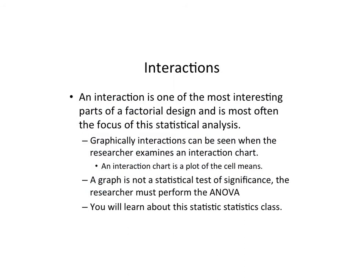The interaction is probably the most interesting part of a factorial design and is most often the focus of statistical analysis. While the main effect hypotheses give us some information, testing the interaction hypothesis is usually the most important thing. Graphically, interactions can be seen on an interaction chart — a line graph that plots all the cell means. A graph is not a statistical significance test; a researcher would need to perform a factorial ANOVA to determine statistical significance.